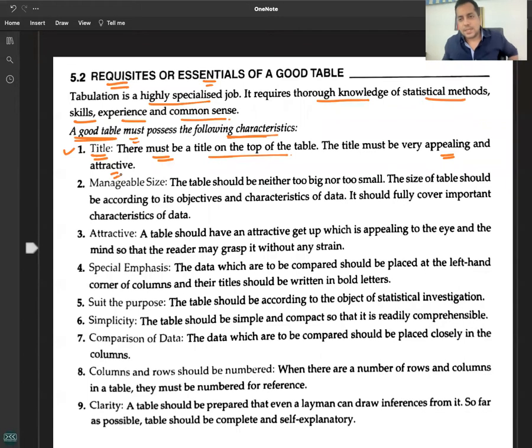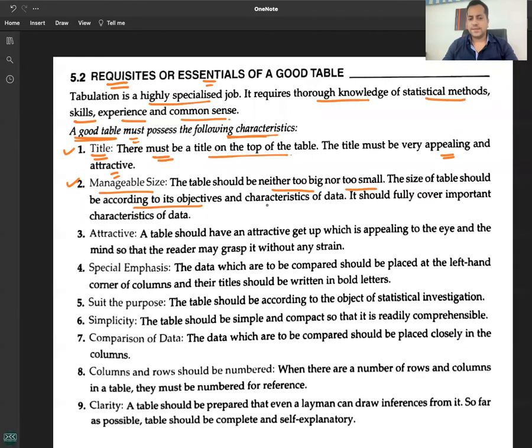Number two: Manageable Size. The table should neither be too big nor too small. The size should be according to its objectives and characteristics of data. It should fully cover important characteristics of the data.